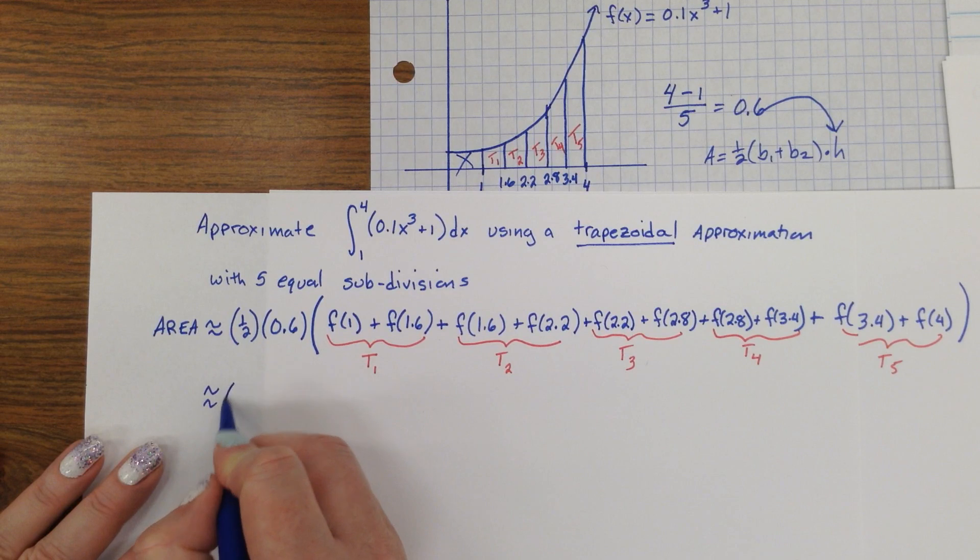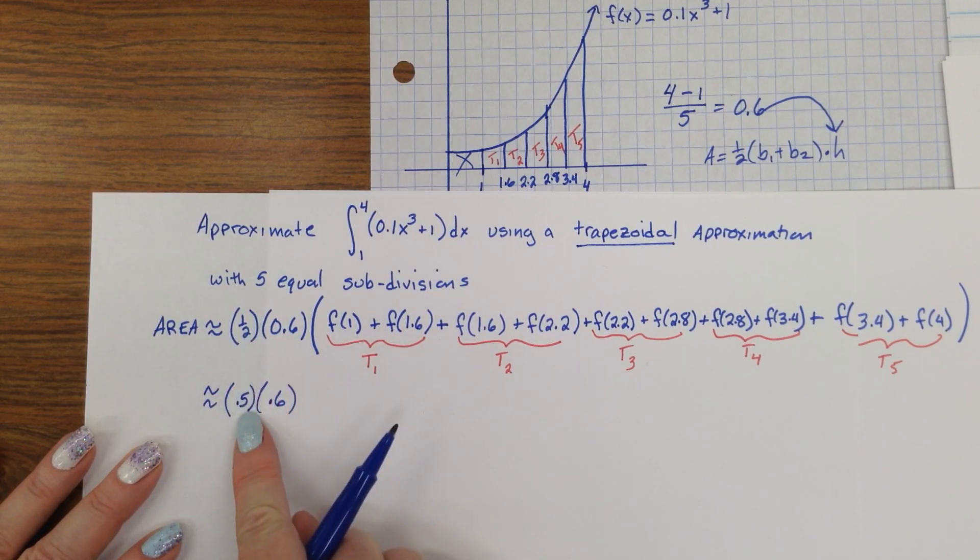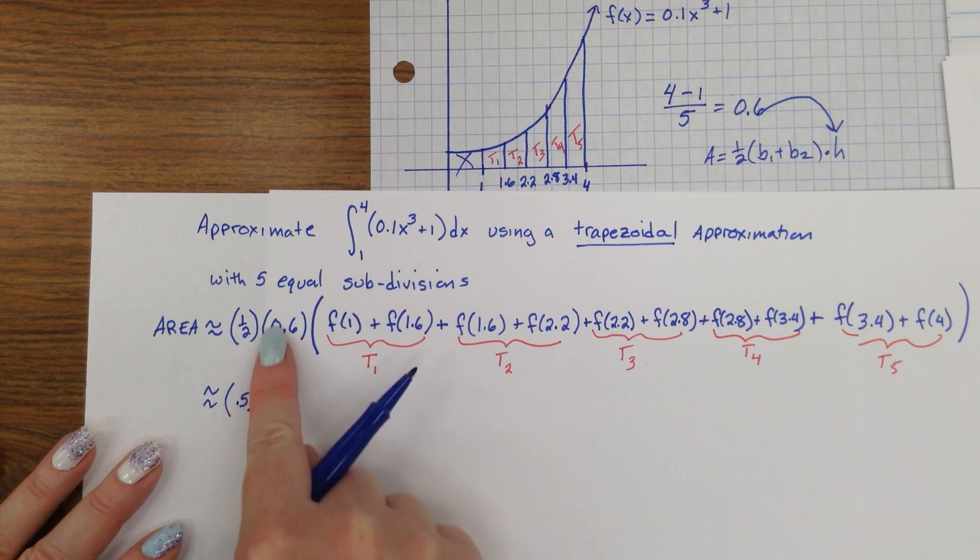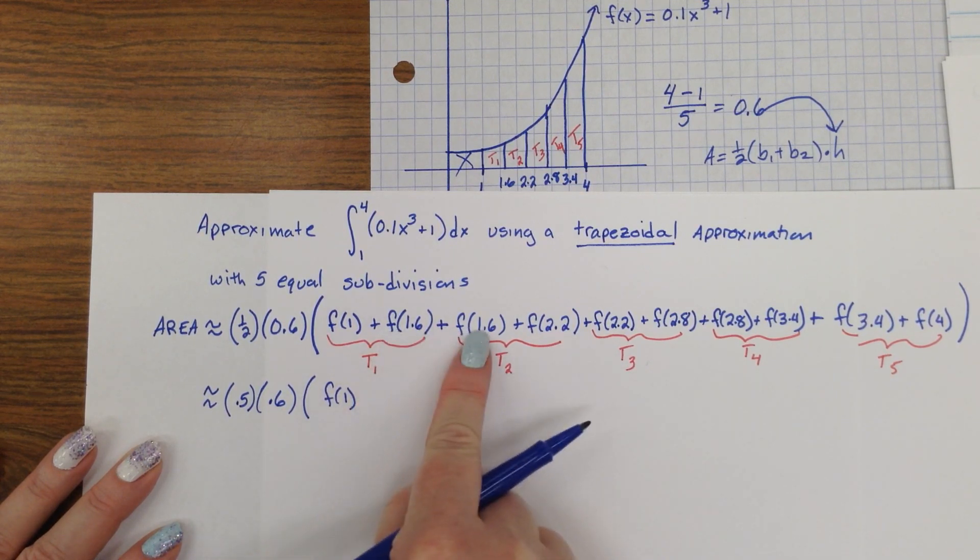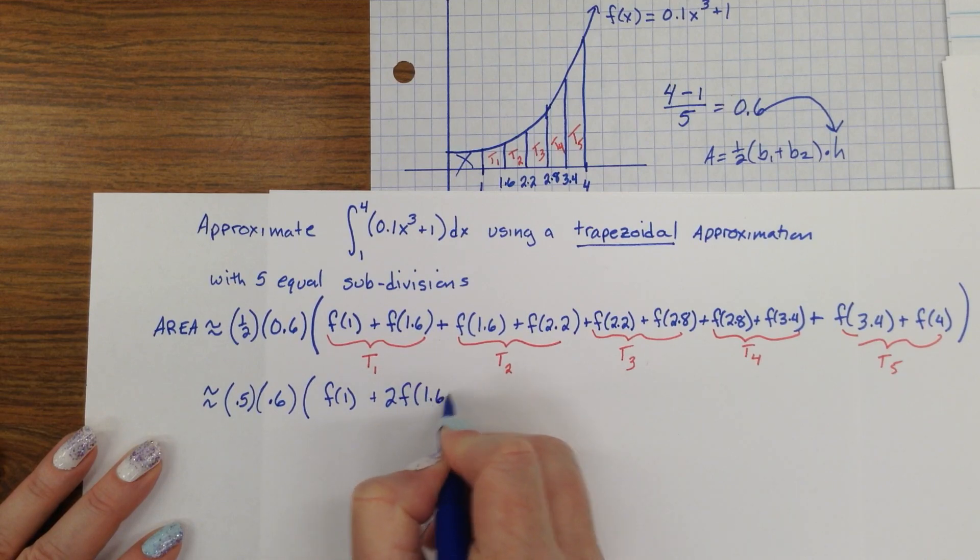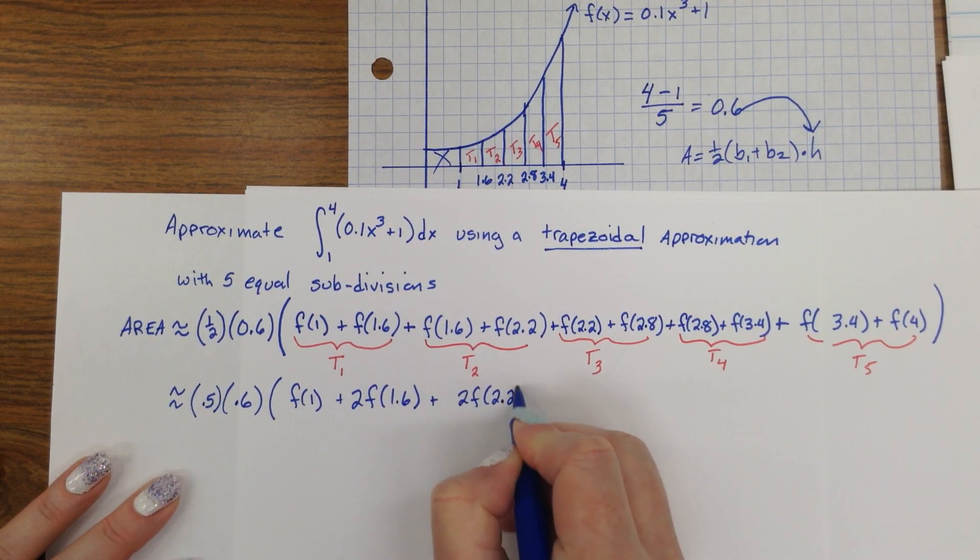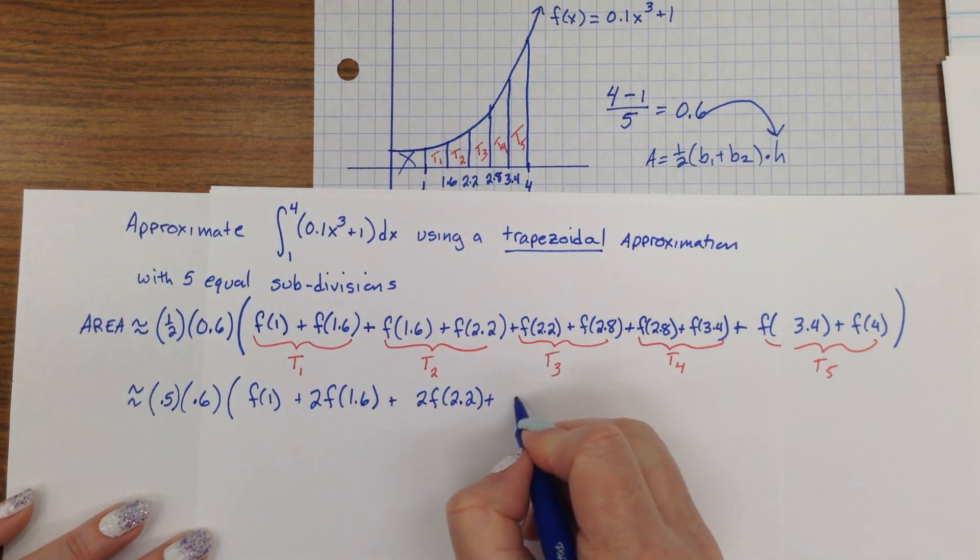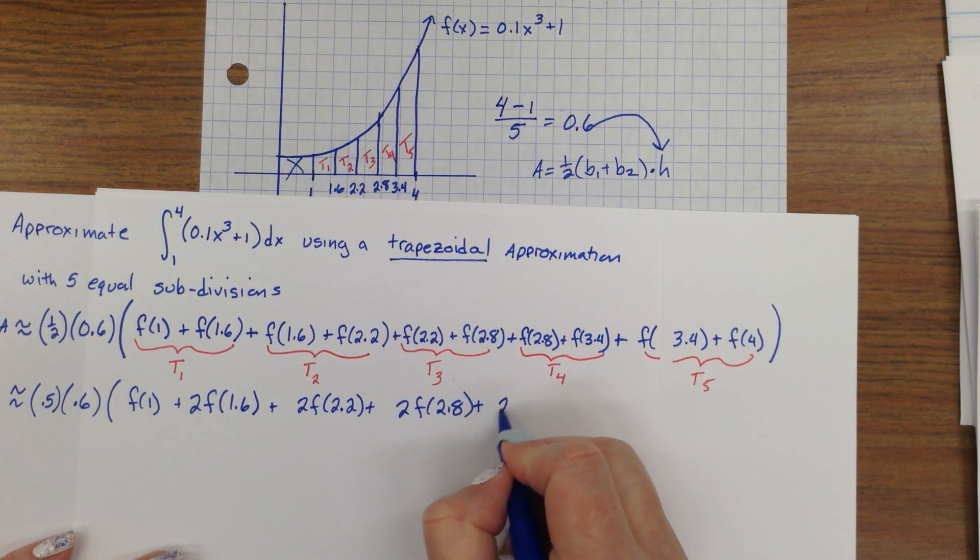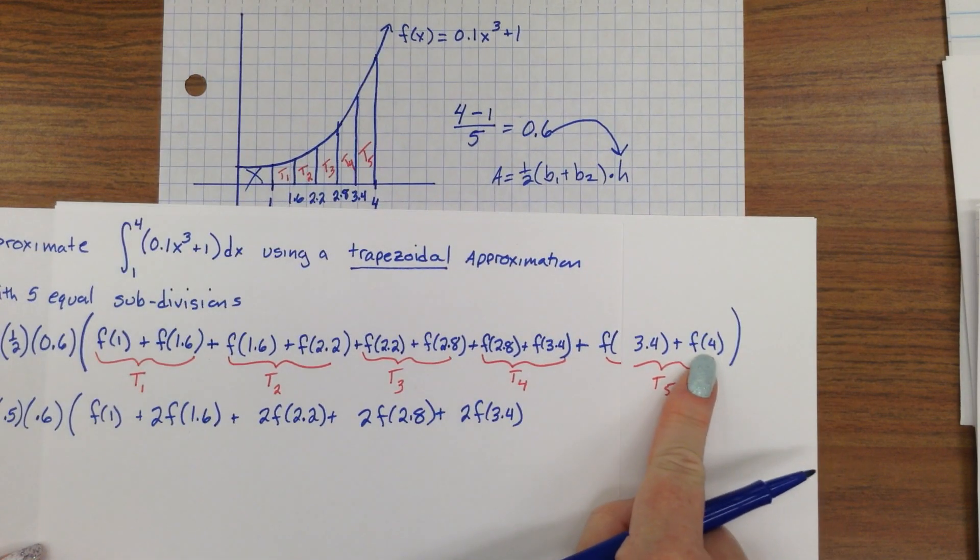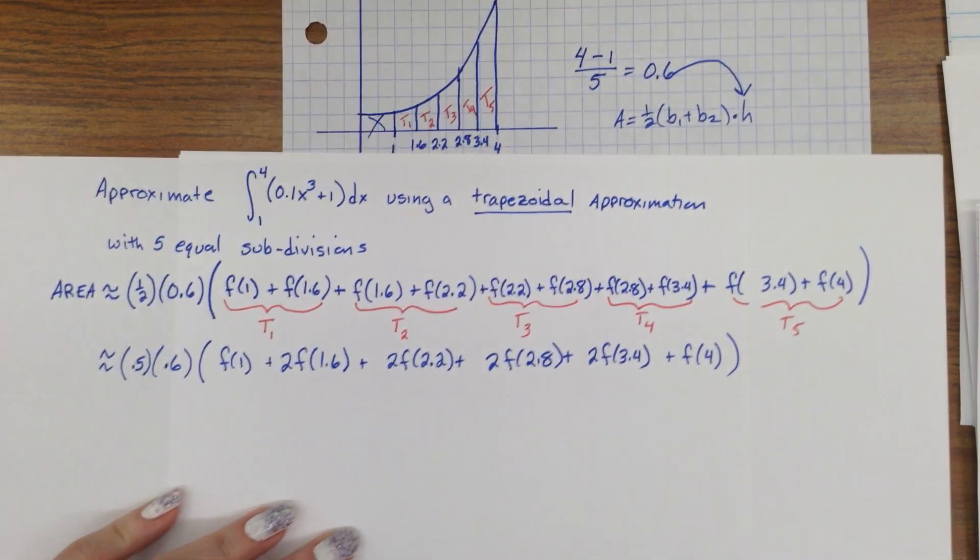Our area will be approximately. If you want to change that from a fraction to a decimal, by all means, go ahead. There's the 0.5, the 1 half from the trapezoid formula. There's the height of each trapezoid. F of 1. Two of these. Two of those. Two of the next base. Two of the 3.4 bases. But the last base only shows up one time. Whew! I can barely get that all on the screen.